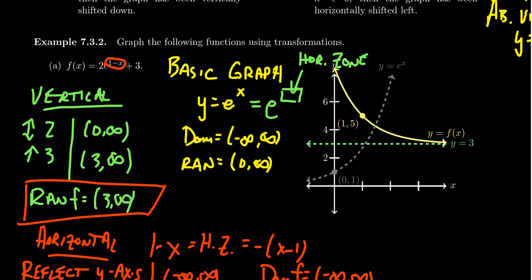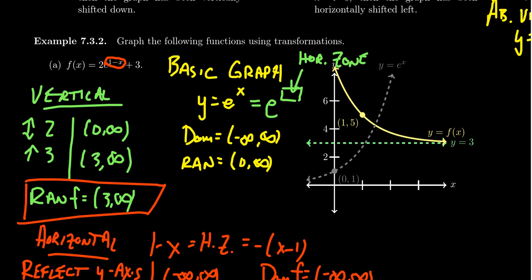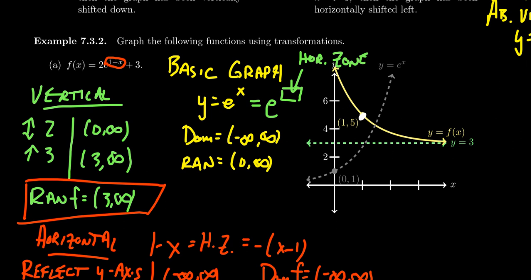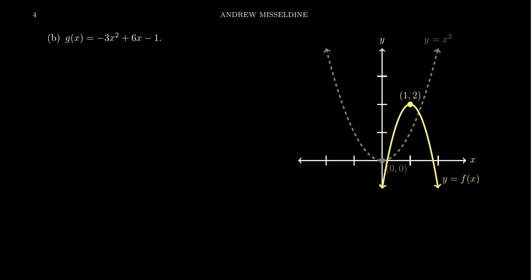Summarizing the graph: we stretched everything by a factor of 2 so it's taller, shifted it up by 3, reflected across the y-axis so instead of an increasing growth exponential it's a decreasing decay exponential, and shifted to the right by 1 so the original y-intercept moves to the point (1, 5).